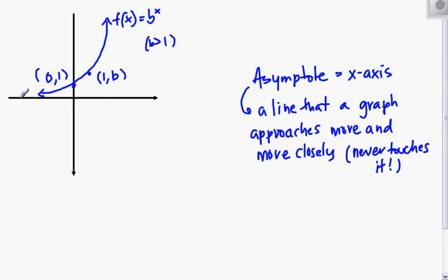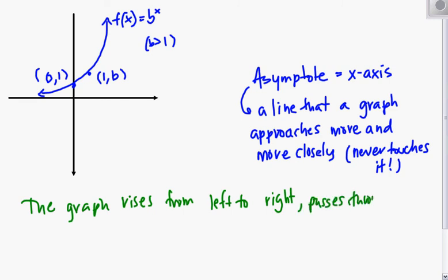So it will never hit this x-axis right here. That's what this is saying when we say we have an asymptote there. If you notice, the graph rises from left to right and it passes through the points 0, 1 and 1, b.